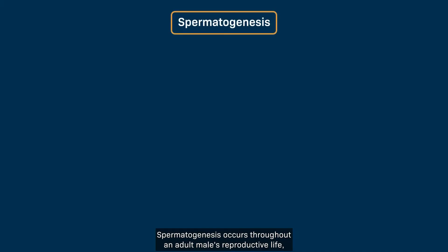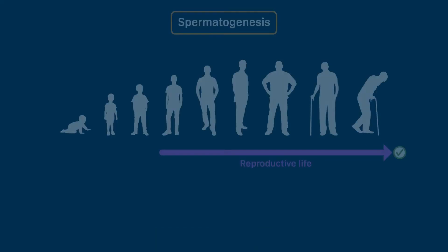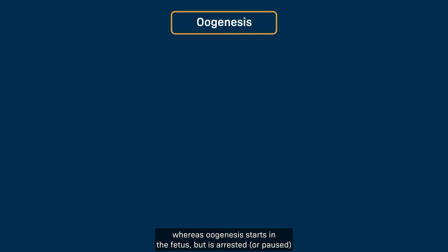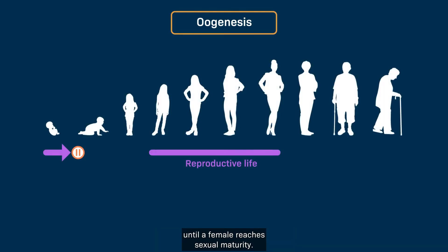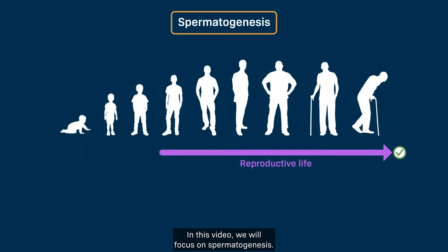Spermatogenesis occurs throughout an adult male's reproductive life, whereas oogenesis starts in the fetus but is arrested, or paused, until a female reaches sexual maturity. In this video, we will focus on spermatogenesis.